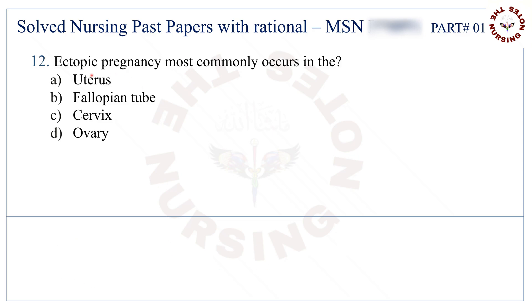Question number 12: Ectopic pregnancy most commonly occurs in the. The correct answer is B — fallopian tube.